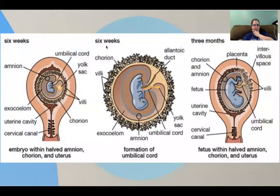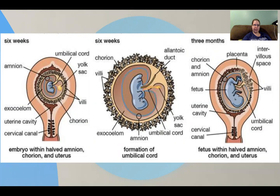The first two diagrams are looking at six weeks — this one is just a close-up view. Here is the uterus on the outside. Here we have the villi; the chorion is the layer underneath, which is why we call it the chorionic villi. The embryo is connected to the chorion by the umbilical cord. The amnion is this light sac around it, and that is the yolk sac.